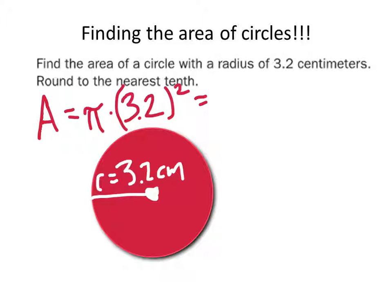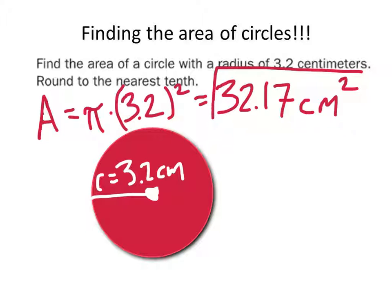What does that give you in your calculators? 32.17. Centimeters squared. Bam. Here's your area.